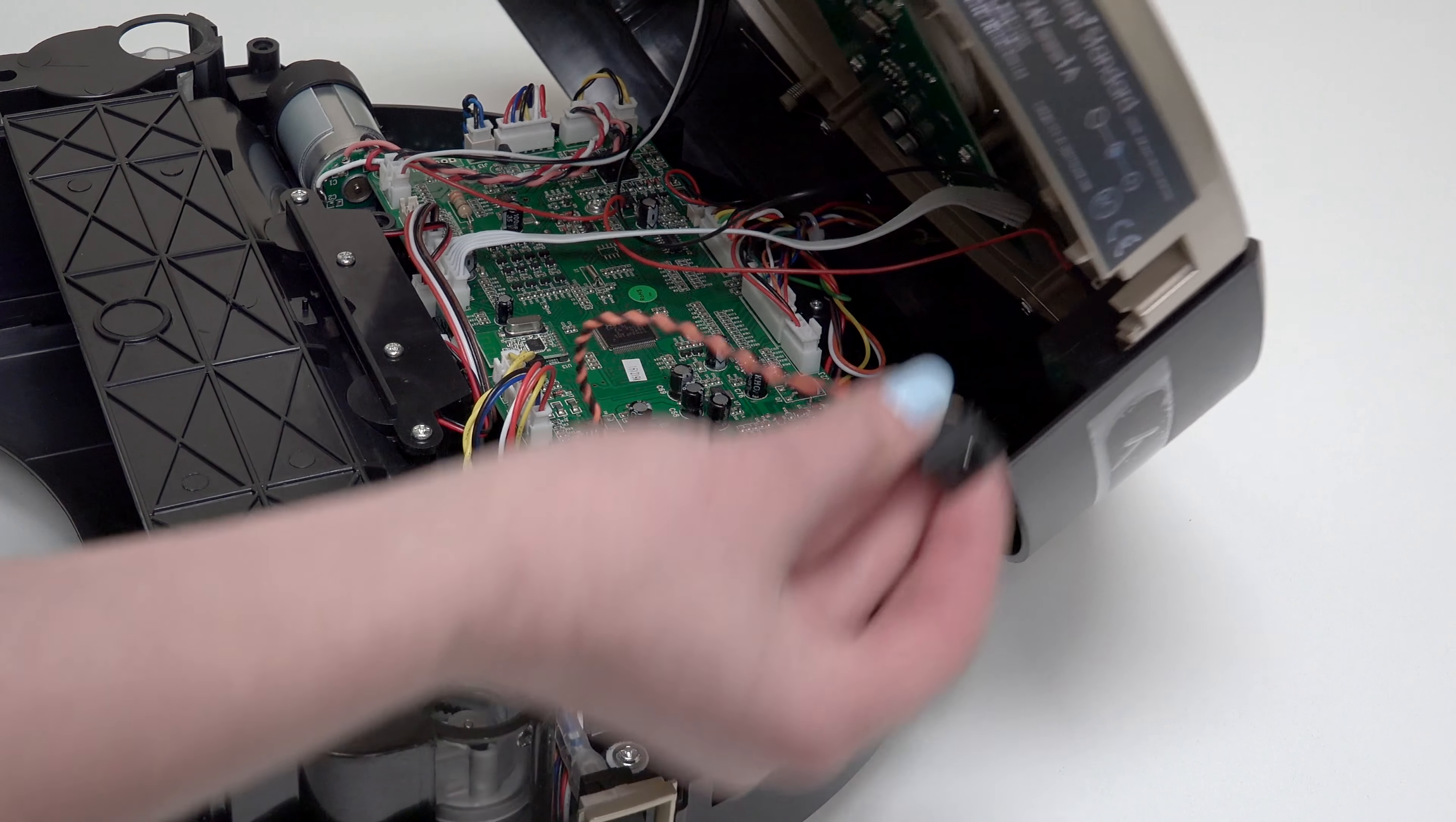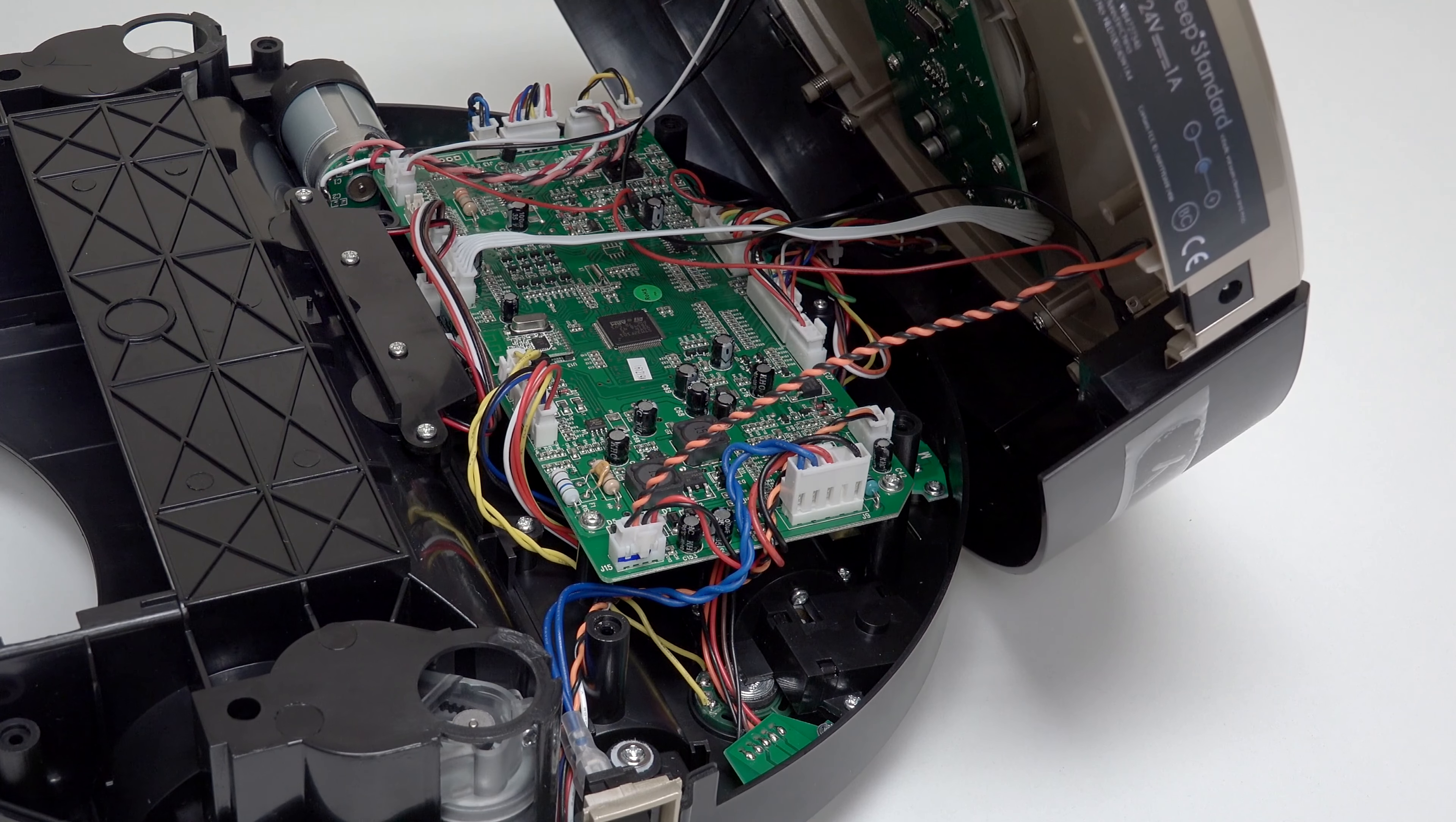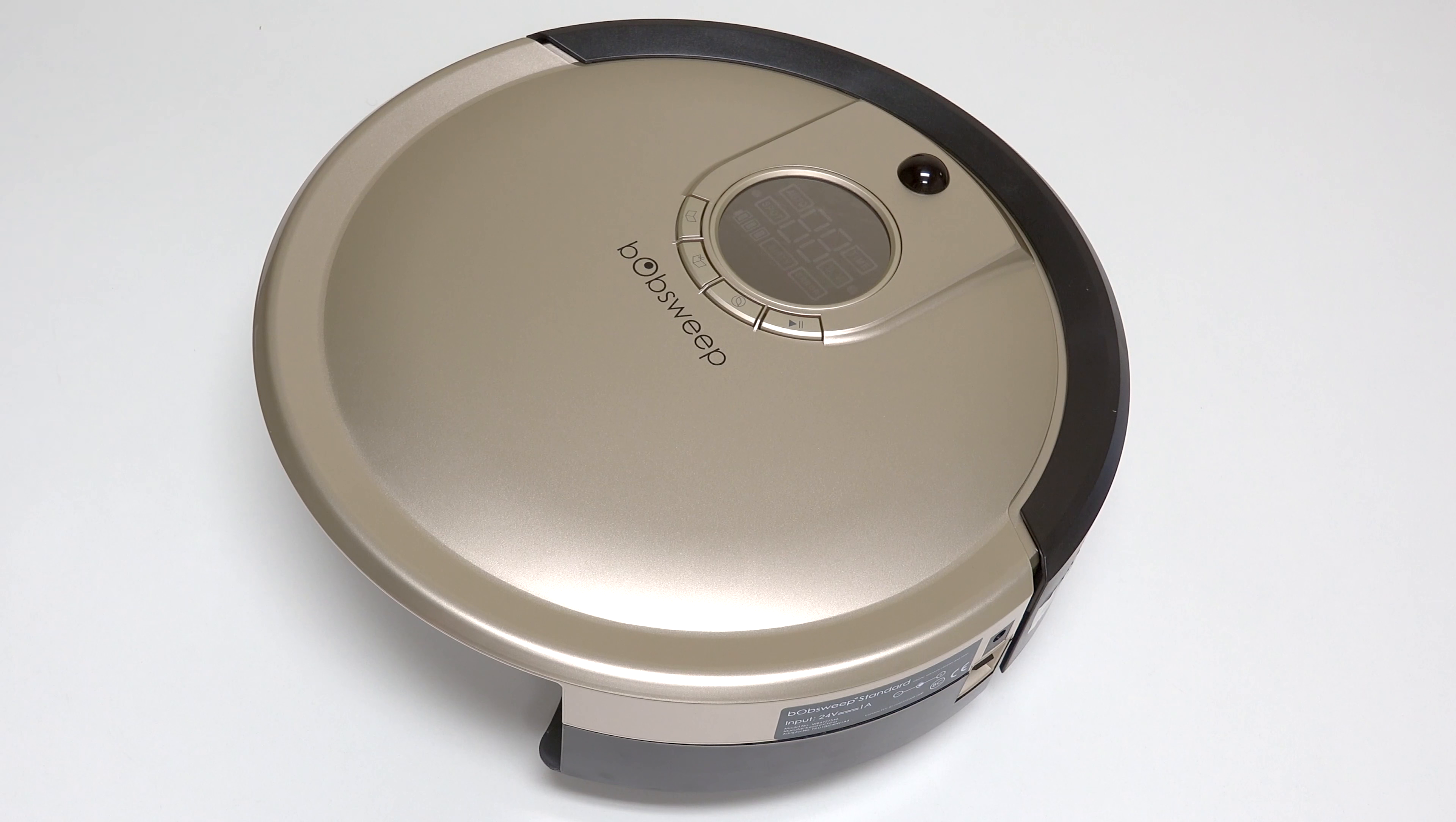Remember to slide the power inlet back into its space on Bob's cover. Align the cover's edges precisely, then flip Bob over onto a flat surface.